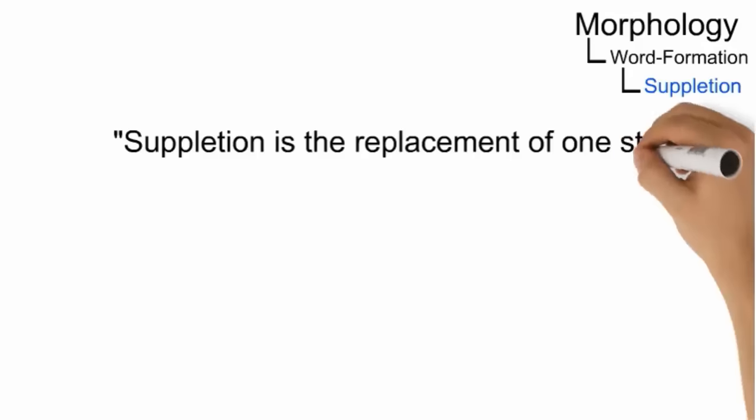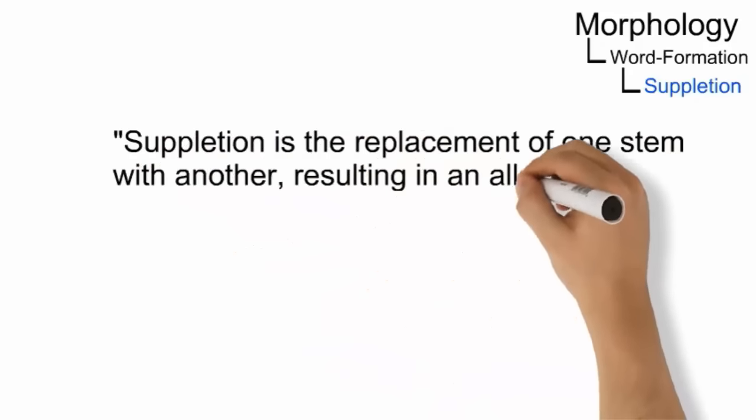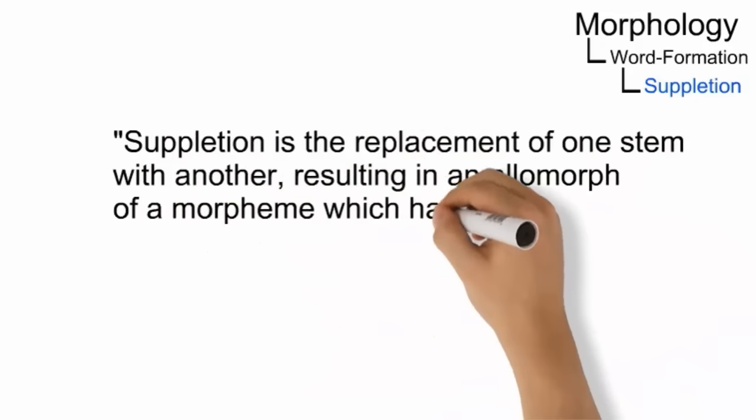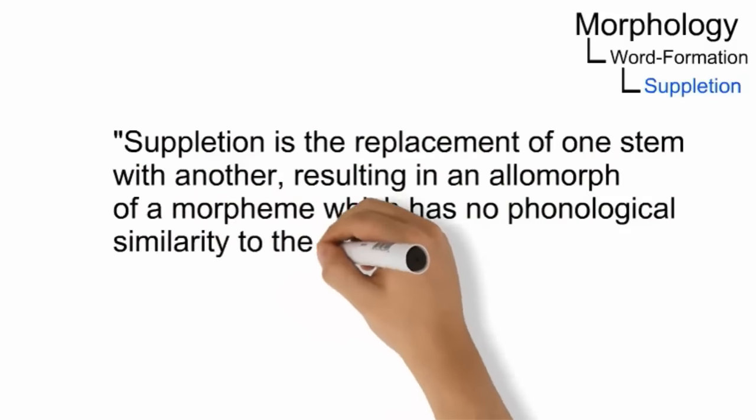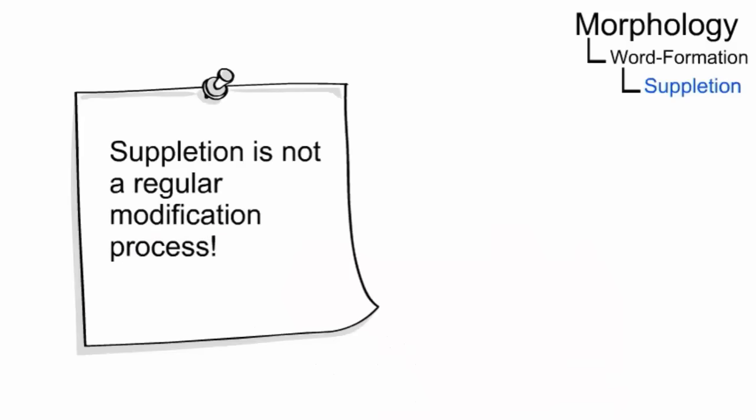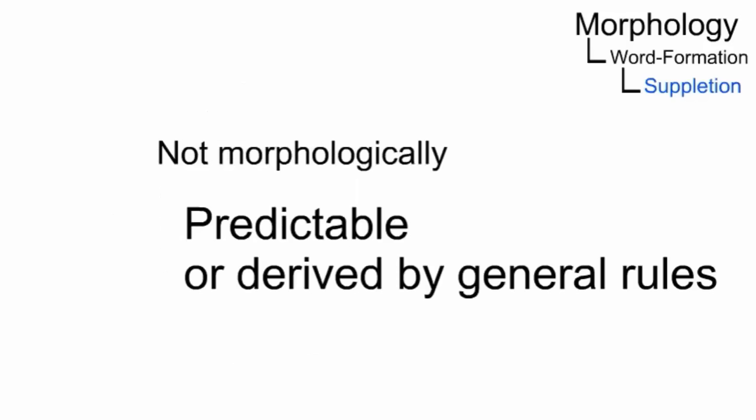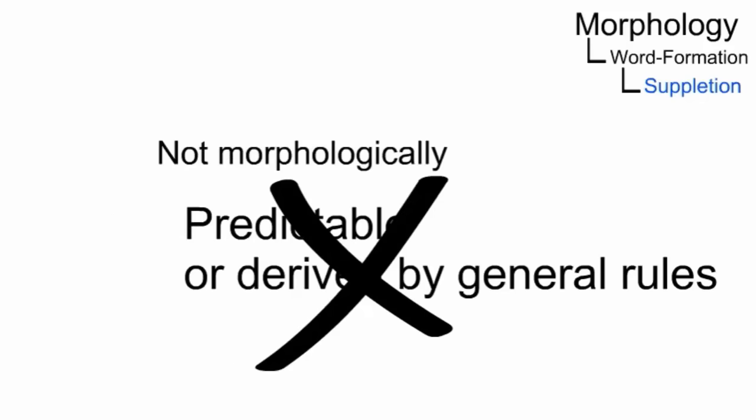Suppletion is the replacement of one stem with another, resulting in an allomorph of a morpheme which has no phonological similarity to the other allomorphs. Suppletion occurs when the syntax requires a form of a lexeme that is not morphologically predictable.